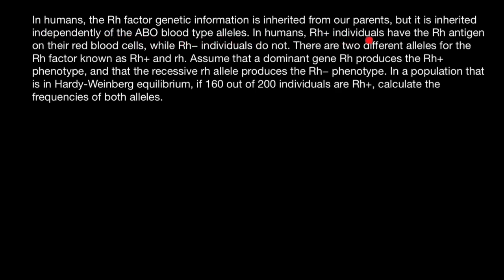In humans, Rh positive individuals have the Rh antigen on their red blood cells, while Rh negative individuals do not. There are two different alleles for the Rh factor, known as Rh positive (dominant) and Rh negative (recessive).